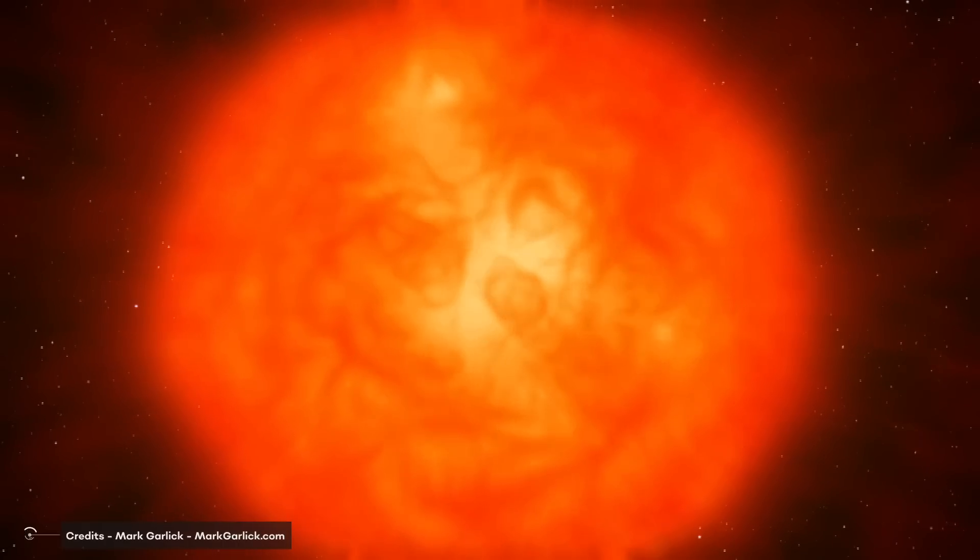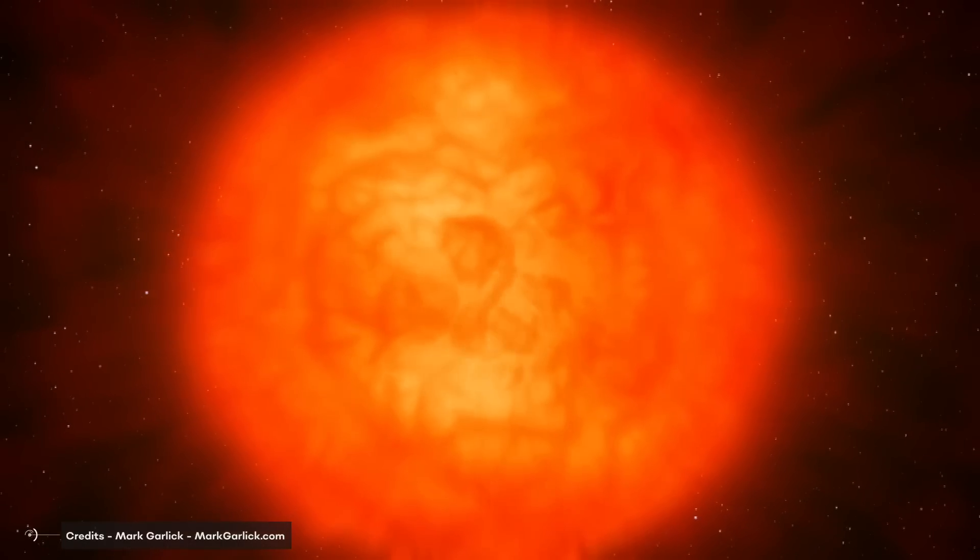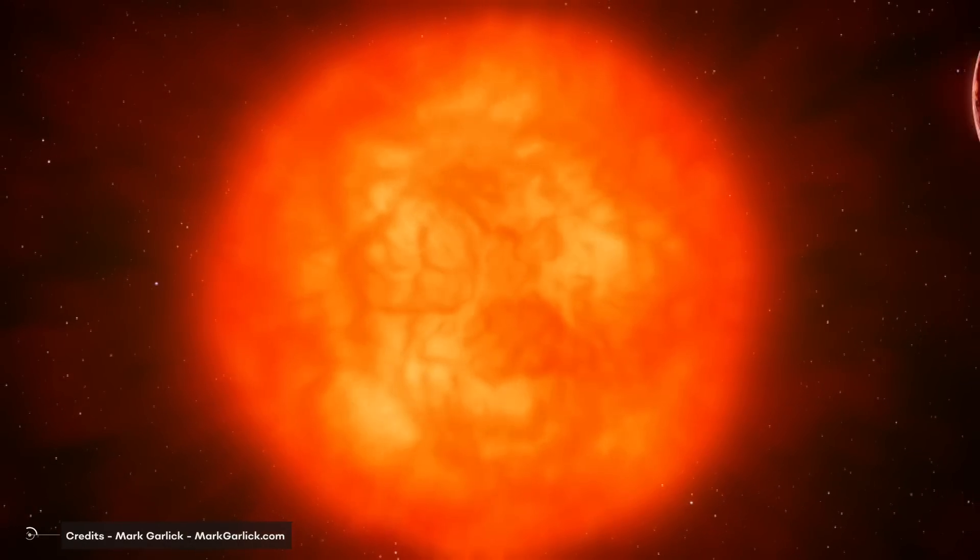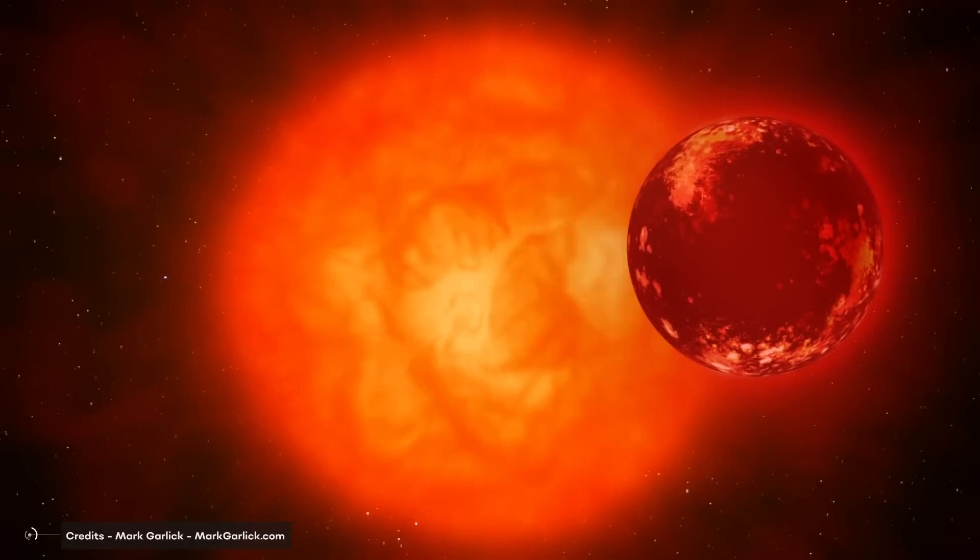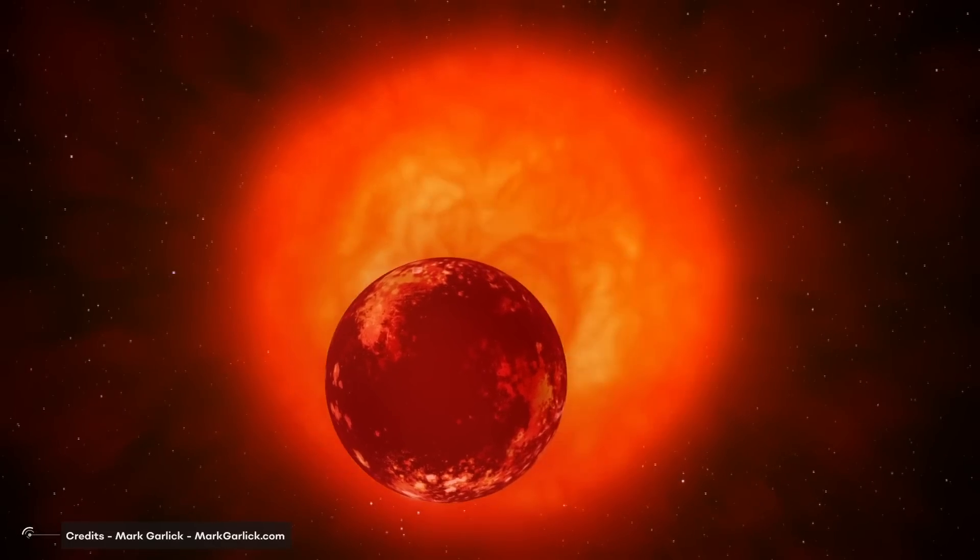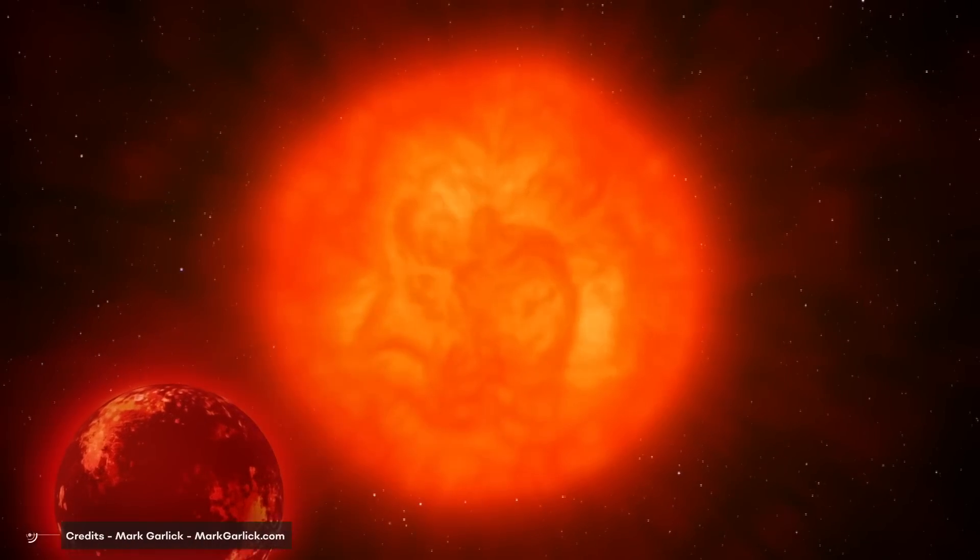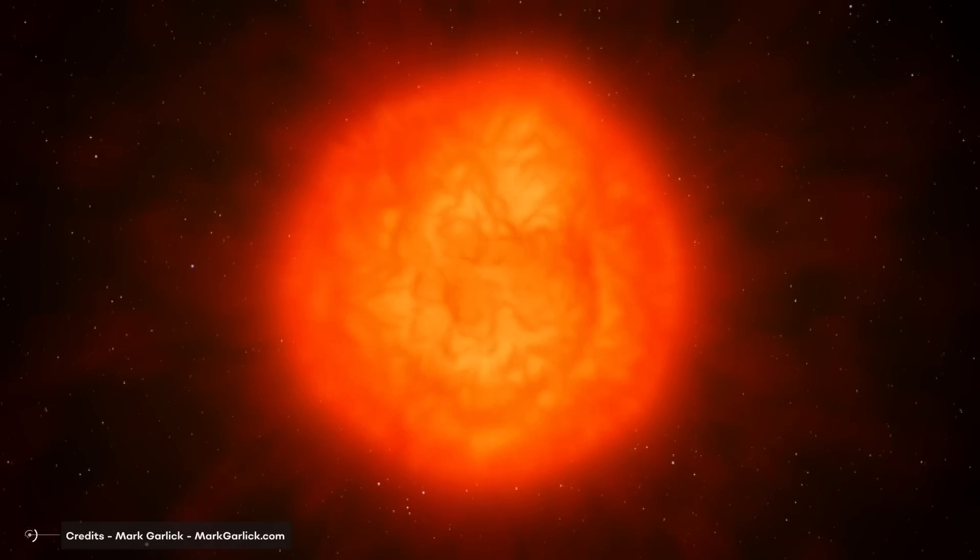These stars tend to have lower metallicities and thus contain fewer heavy elements. Broadly speaking, the metallicity of a star can be inferred from its spectral lines. Metal-rich stars will show, on average, more lines than metal-poor ones at the same temperature.